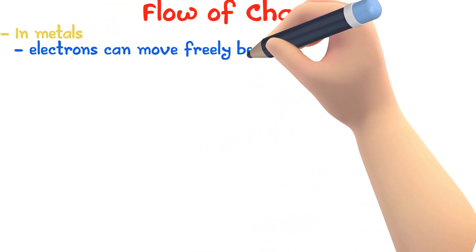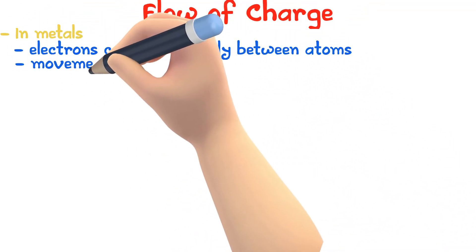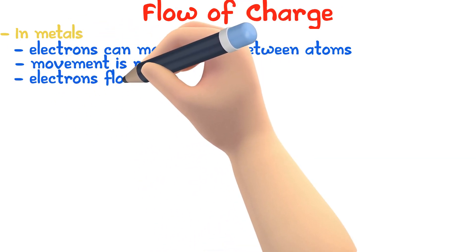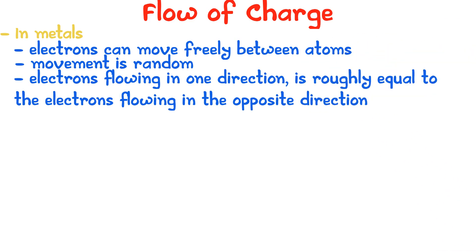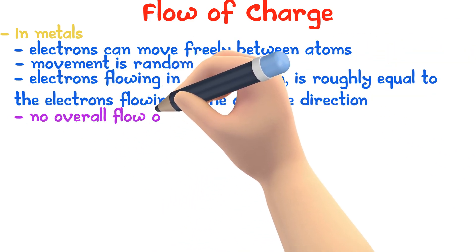In metals, electrons can move freely between atoms. Normally this movement is random, which means electrons flowing in one direction are roughly equal to the electrons flowing in the other direction. This would mean that there is no overall flow of charge.